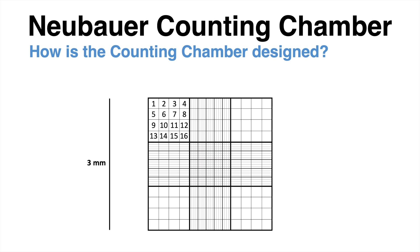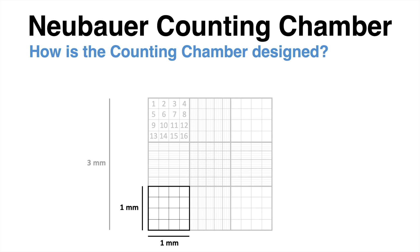One of the 9 big squares, which will later be used for counting cells inside, has a size of 1 x 1 mm, resulting in a surface area of 1 mm².